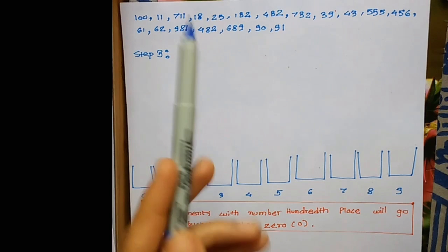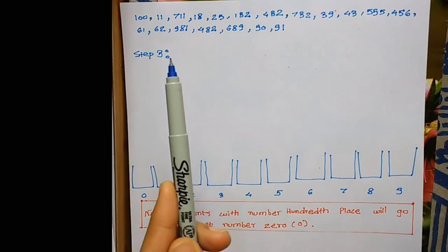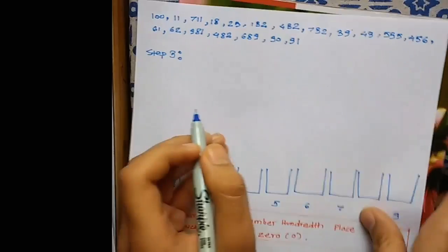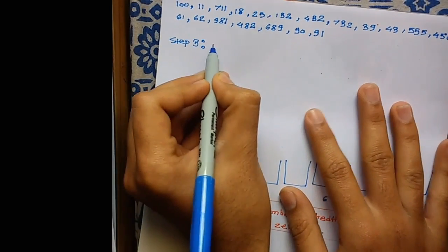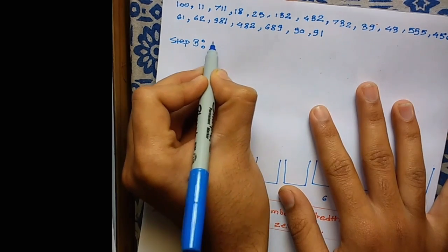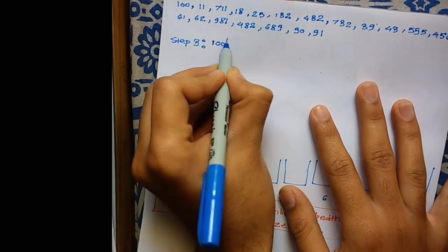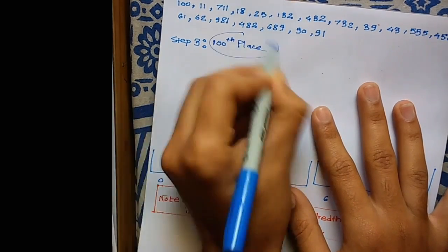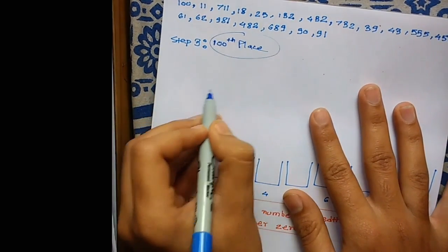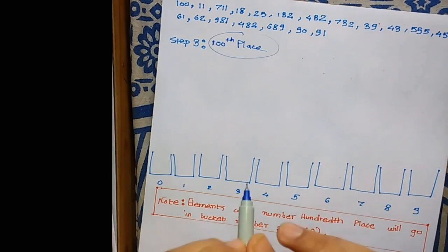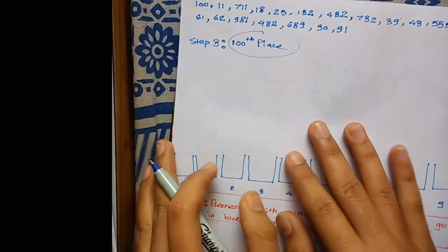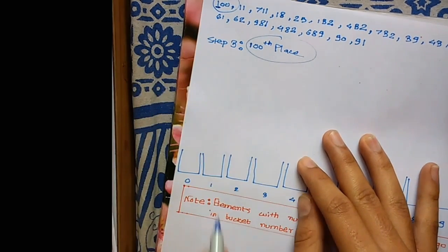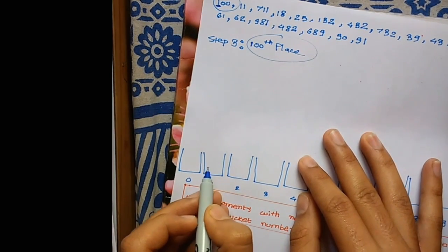These are the elements sorted after step 2. Step 3 is the last and final step, called the 100th place. It's obvious that in this step we check the 100th place and put it in the respective bucket. In 100, the 100th place is 1, so 100 goes in bucket 1.